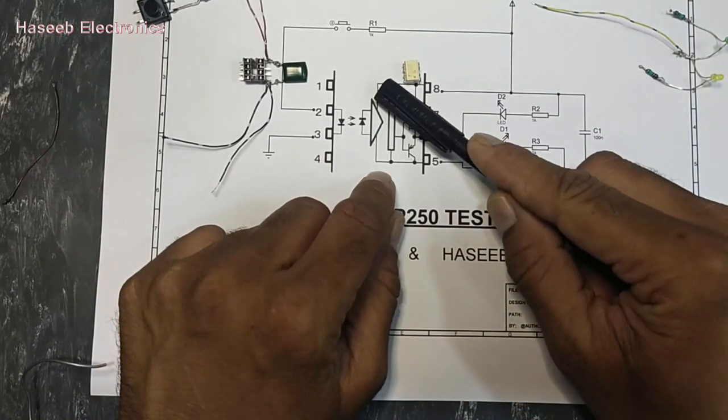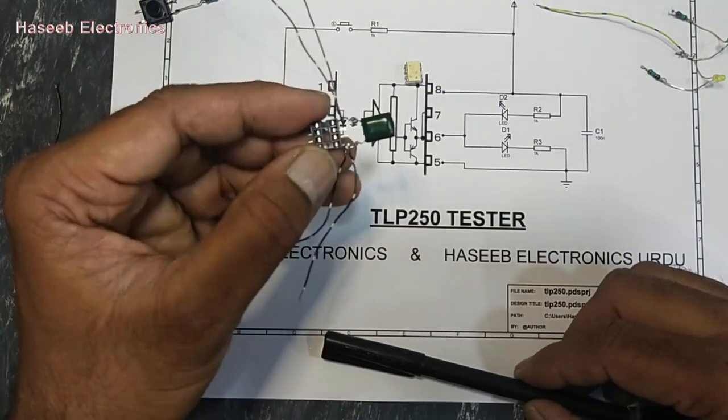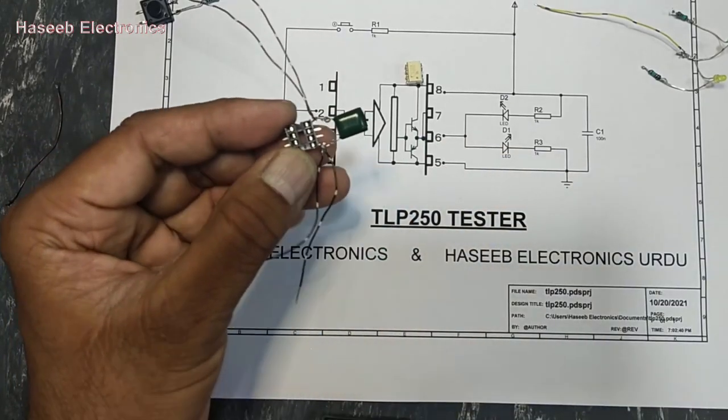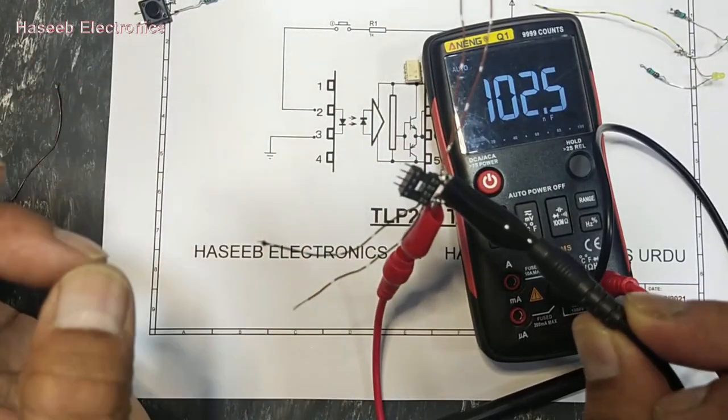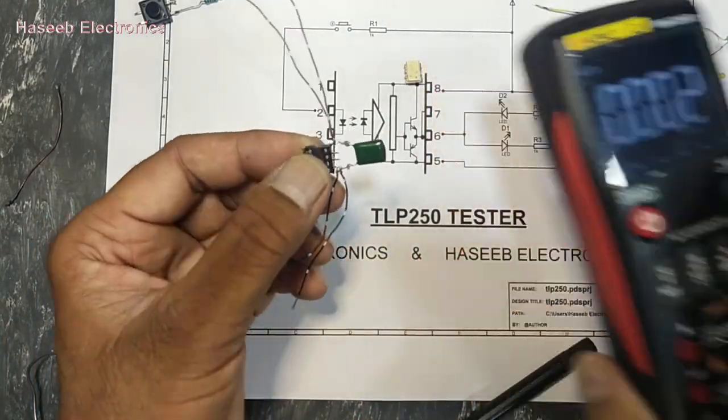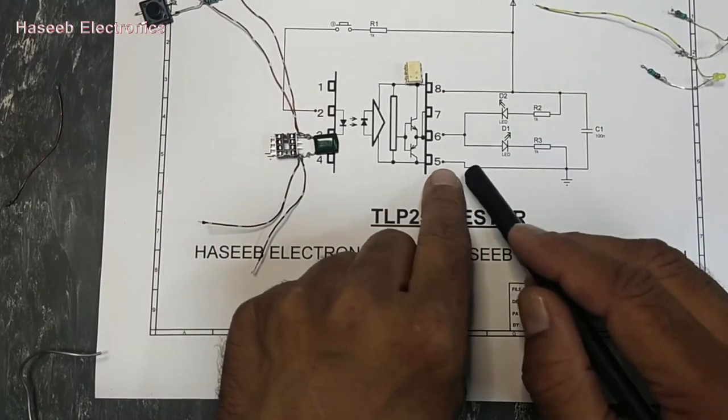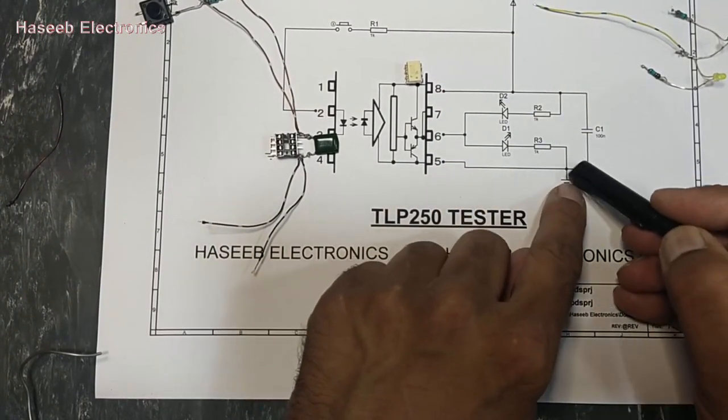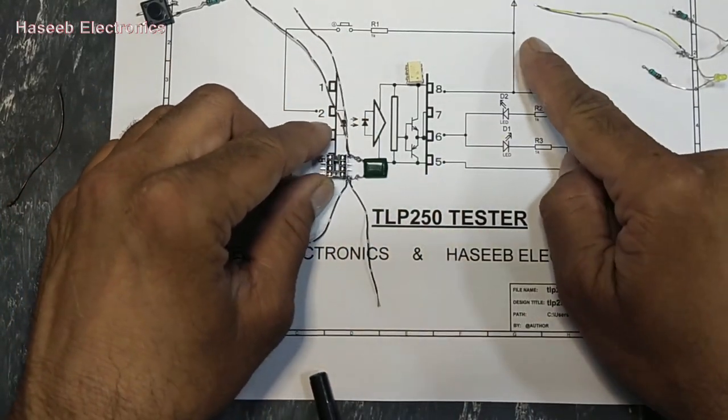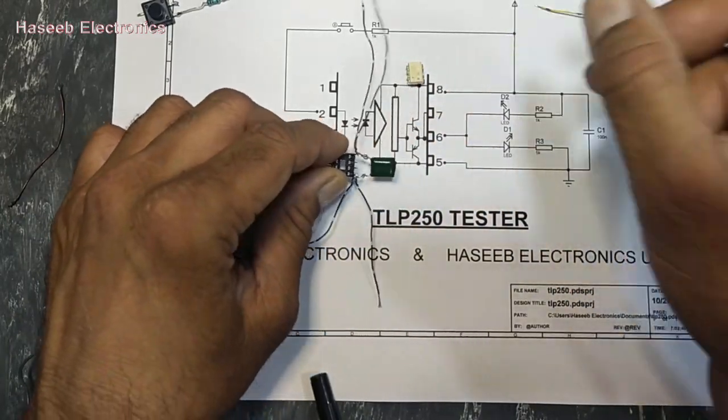To make a quick tester we need an 8 pin IC socket and a 100 nanofarad capacitor (102). We will connect this capacitor between pin 8 and pin 5. Pin 5 is ground, pin 8 is VCC. We will apply 12 volts - this is our input power. Then we need a resistor.